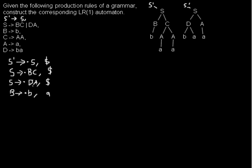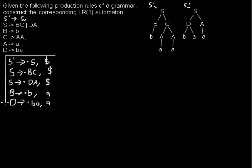We also do a prediction for D. We use the rule D → •ba. Looking at the picture, D will be followed by an 'a', and in this grammar there's nothing else possible. Now I draw a frame around the state because there's nothing more to add.